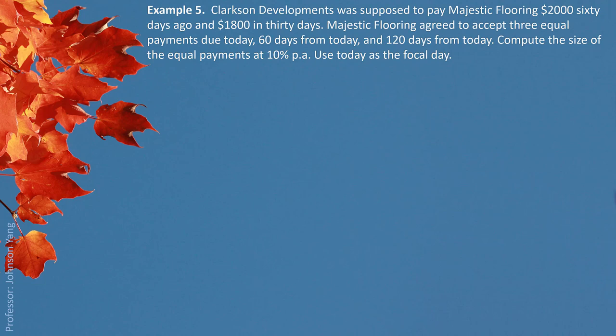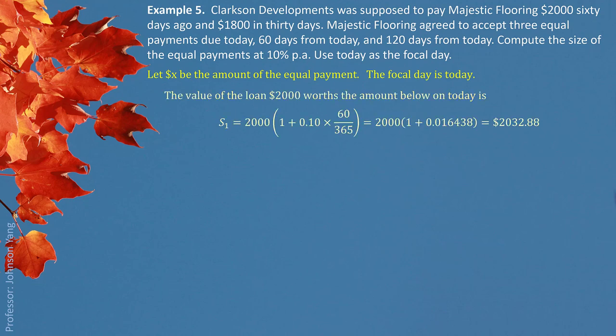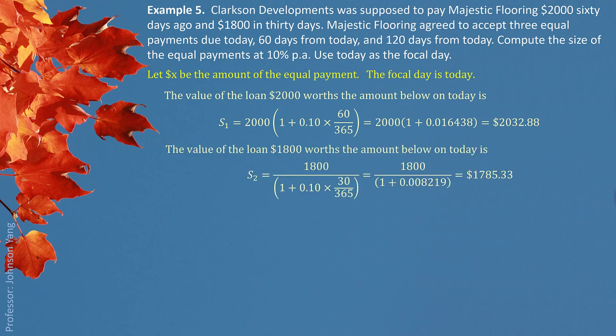One payment is today, the second is 60 days after, and the third is 120 days from now. We use X to represent the equal payment size. For the old debt: $2,000 from 60 days ago — its future value equivalent today is $2,032.88. For $1,800 due in 30 days from now, the present value equivalent today is $1,785.33.